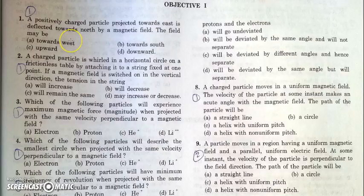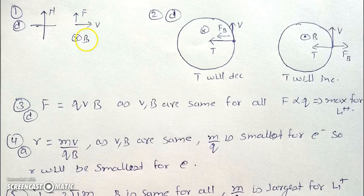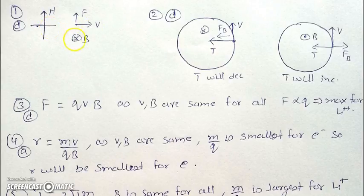In the first question, there is a positive charge which is projected towards east and it is deflected towards north. So V cross B should be the direction of force, which is towards north. Velocity is towards east, so magnetic field should be downward — only then the force will be towards north. V cross B will be towards the north direction, and the particle will be deflected towards north.